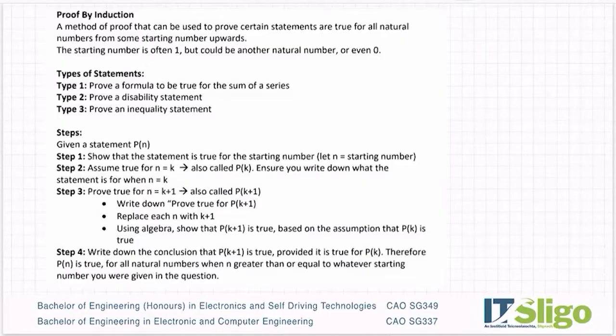Step two, you assume it's true for n is equal to k, and if we continue to use the function notation, of course that'll be p of k. Make sure that you write down assume true for n is equal to k and you fill in the statement when n is equal to k.